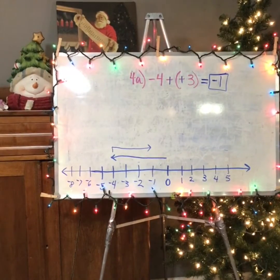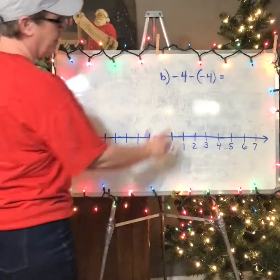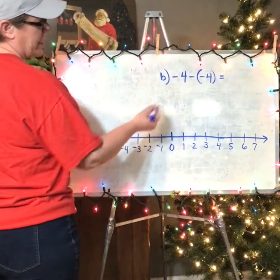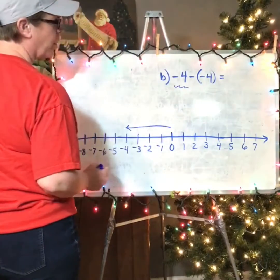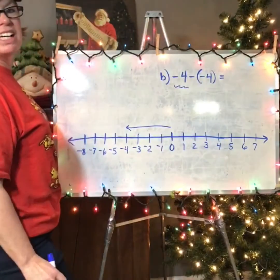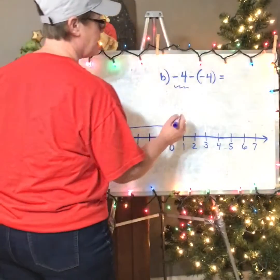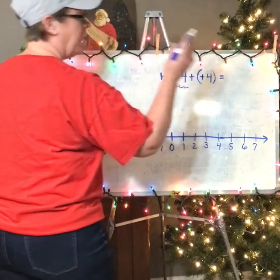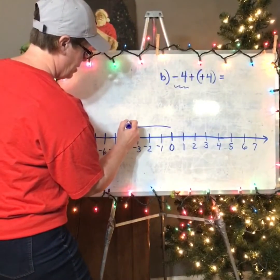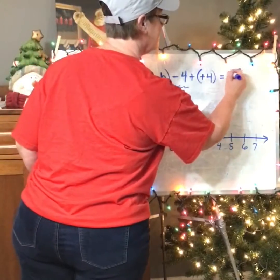Press pause and try the rest of the questions on number four on this page. For question 4B, we have negative 4 minus negative 4. I know I'm starting at negative four. Then I have to take away four negatives — that never really makes sense to me. But subtraction is the same as adding the opposite, so I add the second number opposite: now I'm adding four positives, going right four spots. I end up back at zero. So my answer is zero.